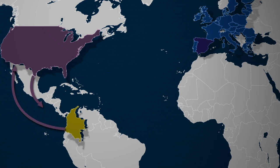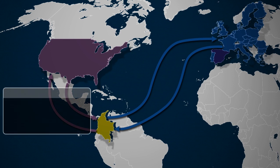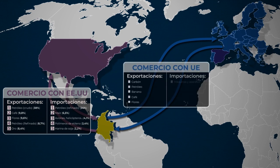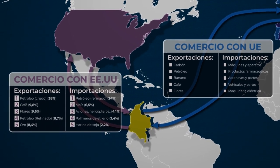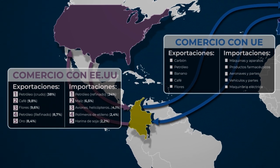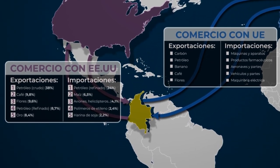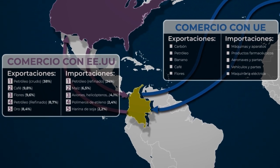Siguiendo con el análisis CAGE, nos vamos al segundo factor: el factor administrativo. En este caso, hablamos de acuerdos bilaterales por parte de Estados Unidos y la Unión Europea, que garantizan la permanencia de los acuerdos comerciales y también la reciprocidad en las ventajas que Colombia debe tener con sus socios económicamente más fuertes.